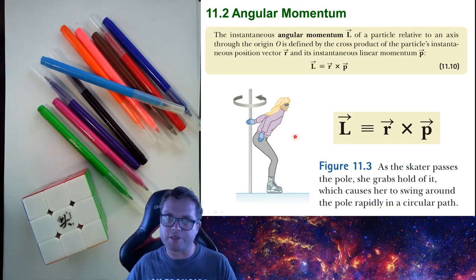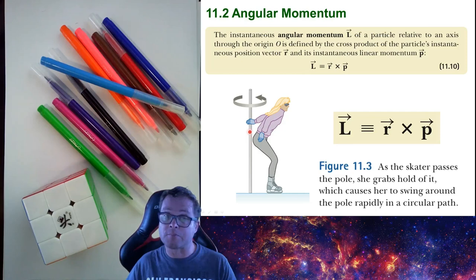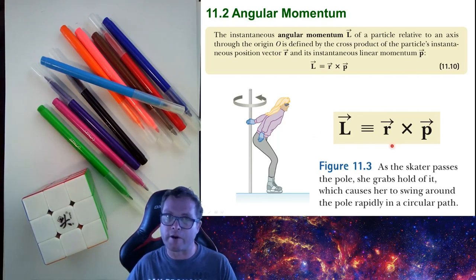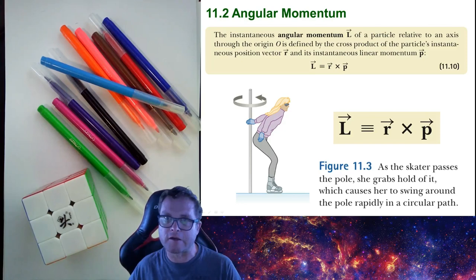We conclude chapter 11 with the definition of angular momentum. Consider a skater who grabs a pole while skating past it, causing her to swing around in a circle. As she approaches, she has linear momentum P = mv, which is converted into angular momentum as she grabs the pole. Angular momentum is defined as the cross product of the position vector and linear momentum: L = R × P. This topic will be covered in more detail in second year.